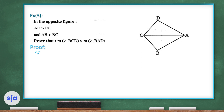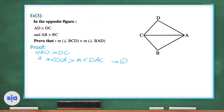Since AD is greater than DC (given), therefore the measure of angle DCA is greater than the measure of angle DAC — call this inequality number 1. Since AB is greater than CB (given), therefore the measure of angle ACB is greater than the measure of angle CAB — call this inequality number 2.